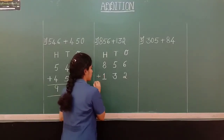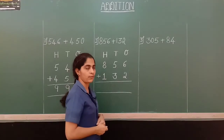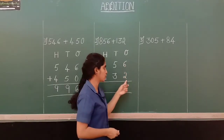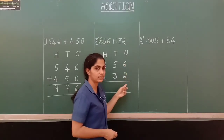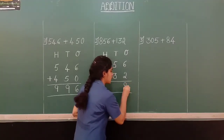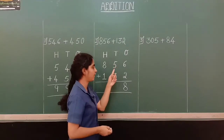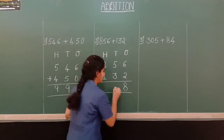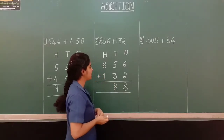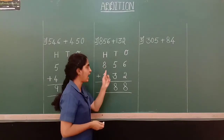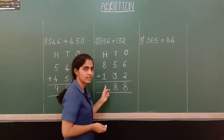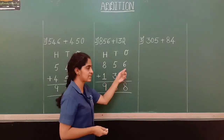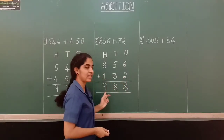Let us add these numbers. We are starting from 1's place. In 1's place we have 6 and 2. So 6 plus 2 is 8. In 100's place we have 8 and 1. When we add 8 plus 1, the answer is 9. So the sum of 856 plus 132 is 988.